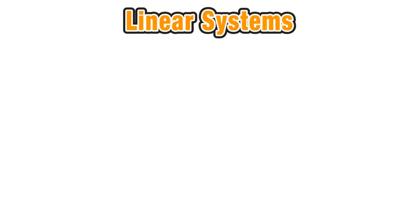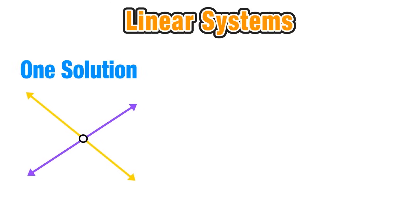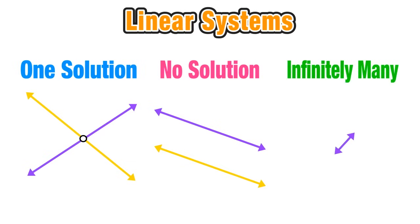Now there are three different possible solutions to any system of linear equations and we need to familiarize ourselves with what these types of solutions look like. A system with one solution intersects one time. A system with no solution involves parallel lines that will never intersect with each other. And a system with infinitely many solutions is two identical overlapping lines that intersect everywhere. Like seriously, everywhere.